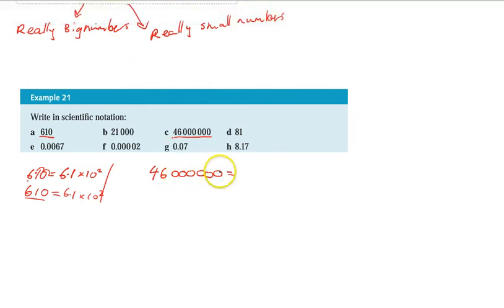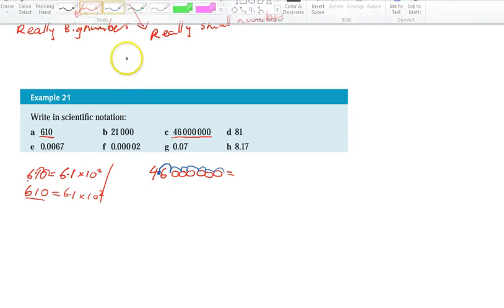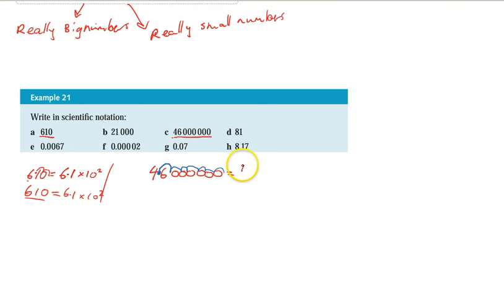Okay so you can see that I can move the decimal place 1, 2, 3, 4, 5, 6, 7 spaces. That's going to leave me with 4.6 times 10 to the power of, it's always 10. Now 10 to the power of what? Now it depends on how many spaces I've moved that decimal.